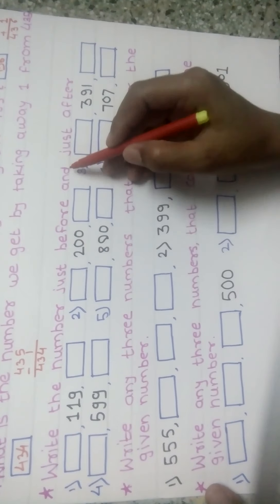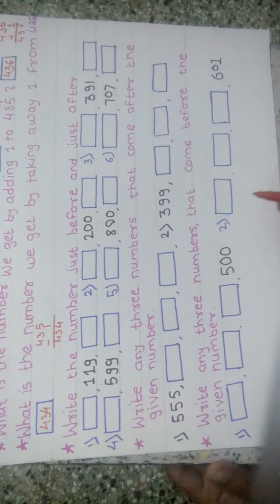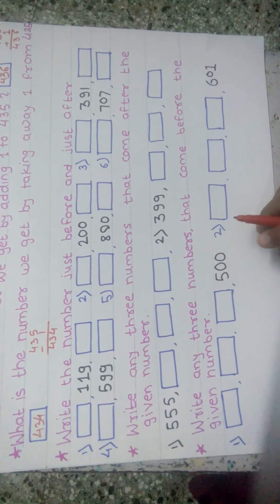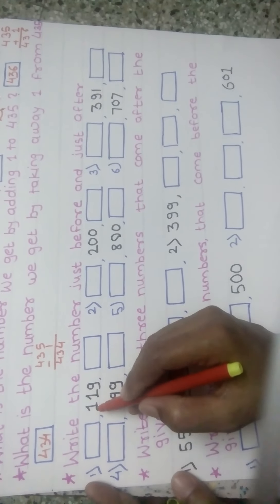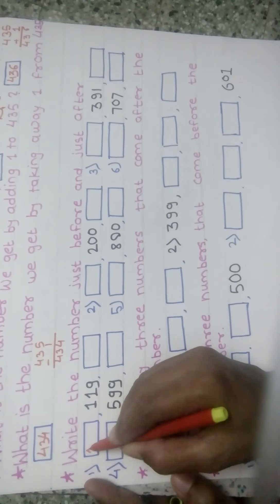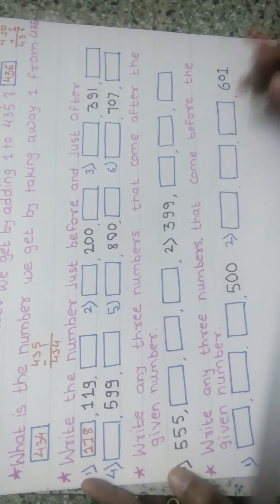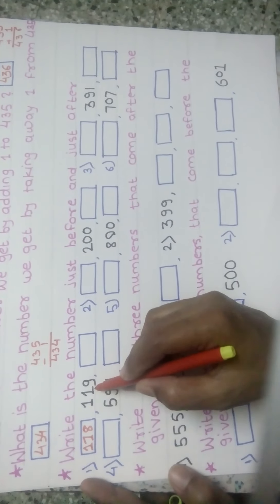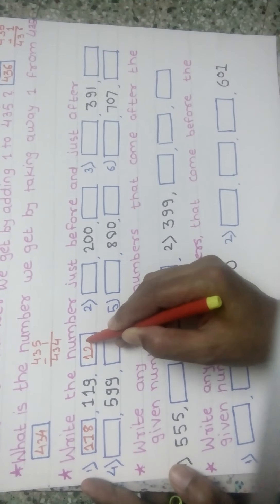Write the number just before and just after. We have to write the number just before and just after. Let's see the first example: 119. Before 119 is 118, and after 119 is 120.